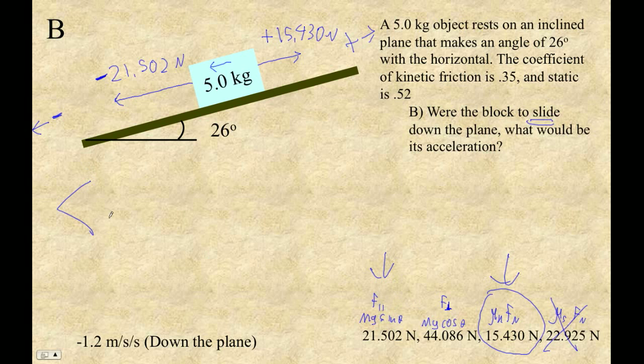So now we're all set. We can just set up a little expression here: minus 21.502 plus, and what we're doing here is F equals MA. The sum of all the forces equals M times A.